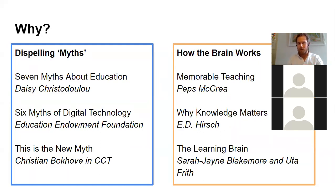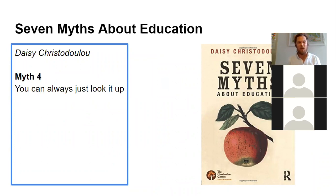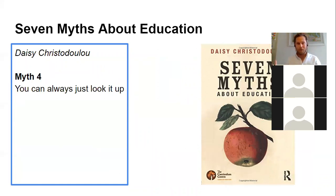I want to pick up on Seven Myths About Education by Daisy Christodoulou, because this really turned everything on its head for me. She pinpoints things that have been around for years — established ideas we think work brilliantly — and shows that actually they're not very effective. Myth four, for example: we don't need to worry about teaching facts because we can always just look it up. Google exists, all kids have phones, so we can just be a 'guide at the side' and teach research skills.